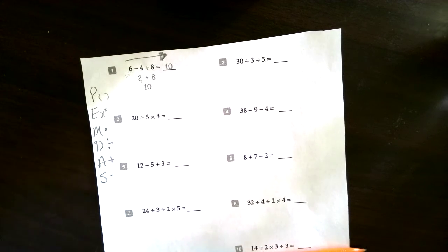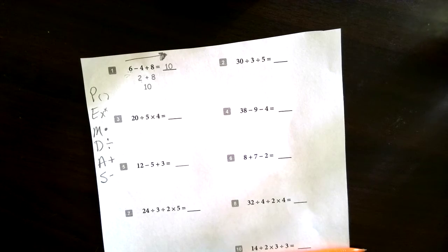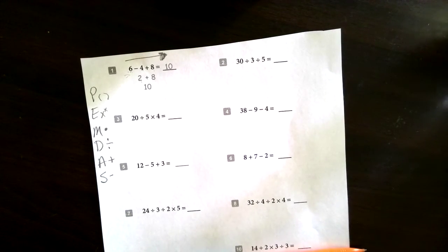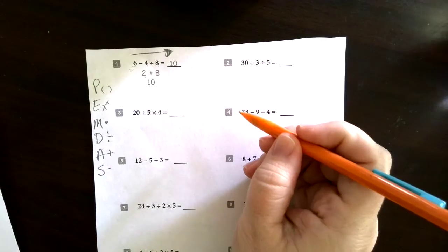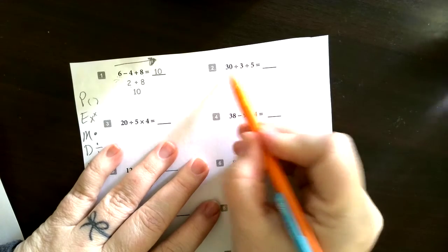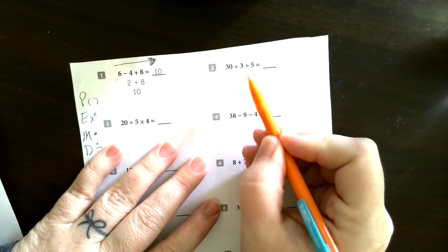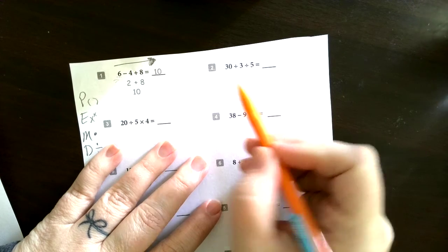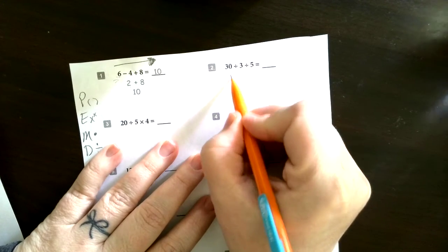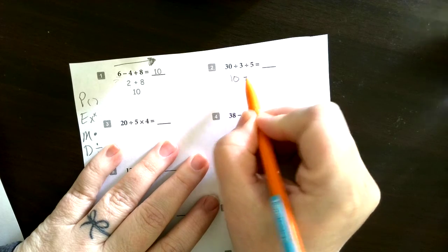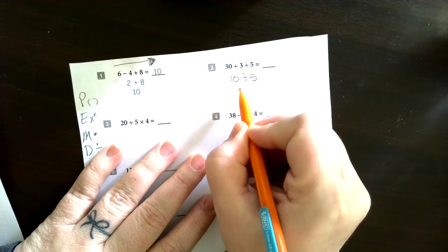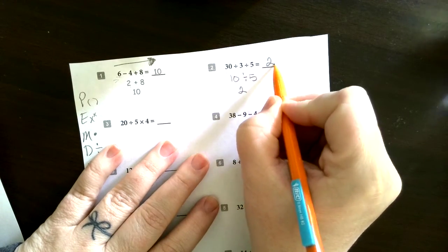All right, so hopefully you've got them written down and we're ready to go. So let's do number two. I've got 30 divided by 3 divided by 5. Again, so we're going to do 30 divided by 3 is 10, and then divide that by 5, which gives us 2. So the answer for this one is 2.